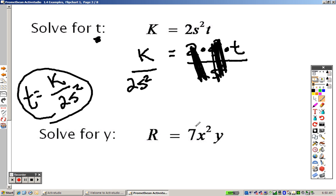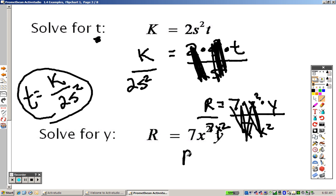Over here, get Y by itself. Same idea. It's like saying R equals 7 times X squared times Y. So the opposite of multiplication is division. And if I want to get Y by itself, I need to get rid of the 7 and the X squared. So I end up getting R over 7X squared, and that equals Y.